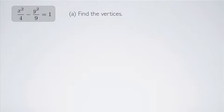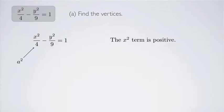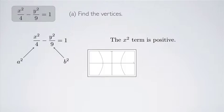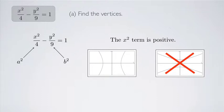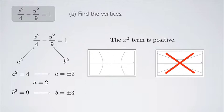First, let's find the vertices. I'm going to rewrite the equation of the hyperbola and note that the x squared term is positive. That means I'm going to call the denominator of the positive term, the x squared term, a squared, and the denominator of the other term, b squared. That also means my hyperbola is oriented horizontally. So a squared equals 4, meaning a equals 2, and b squared equals 9, so b equals 3.